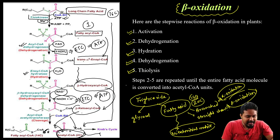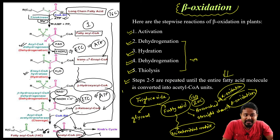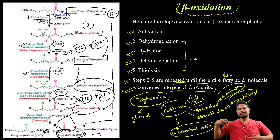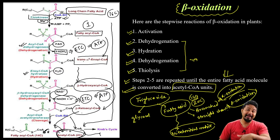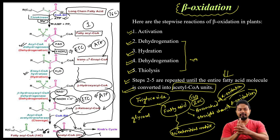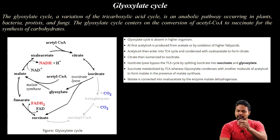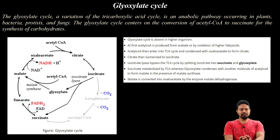So to summarize: steps 2 through 5 are repeated until the entire fatty acid molecule is converted into acetyl-CoA units. The longer the fatty acid chain, the more ATP can be released. This is all about beta-oxidation. Related to this, there is the glyoxalate cycle — an important topic we will discuss in the next class. Thank you so much for watching my video. If you liked the video, please like, subscribe to my channel, and share with your friends. Thank you so much, bye bye.